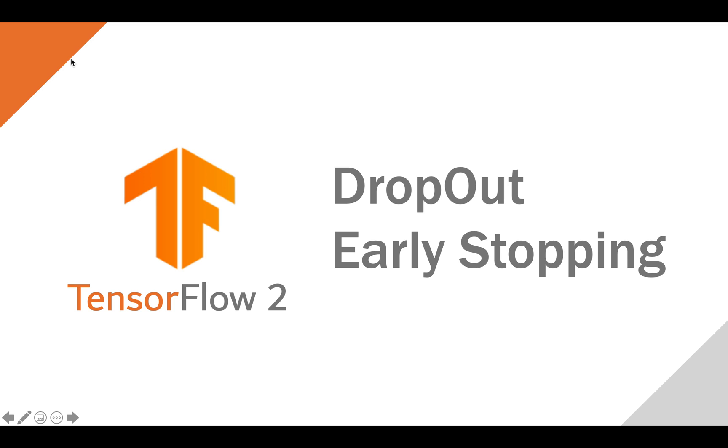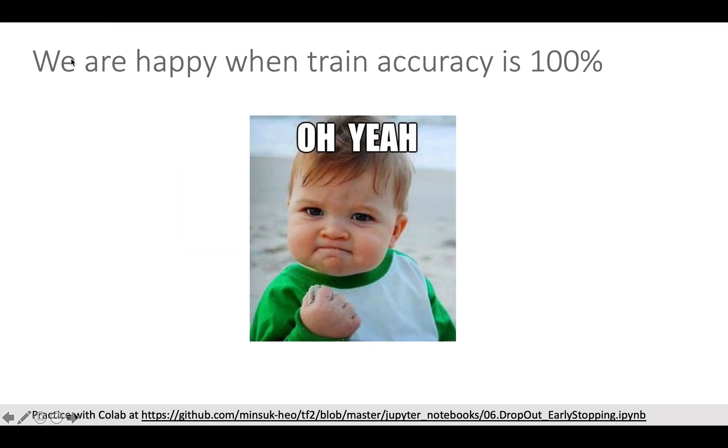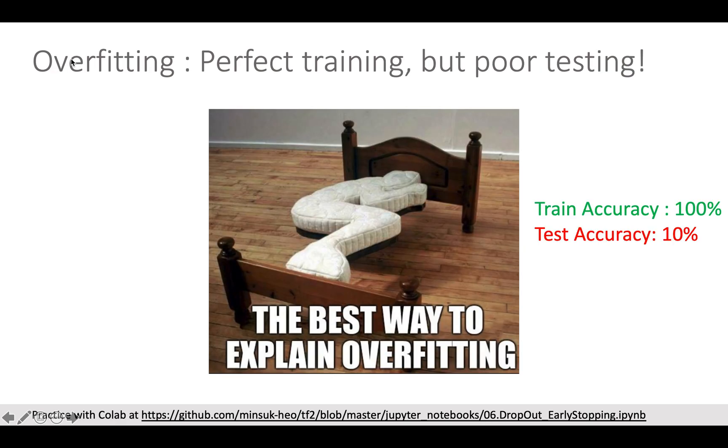So let's playfully understand overfitting first. Overfitting is a situation when your machine learning model is well trained on the training data, but unfortunately the model performs badly on other data such as test data or real data. The overfitting happens because your model was too much trained on the given dataset.